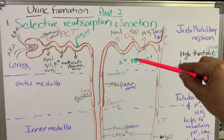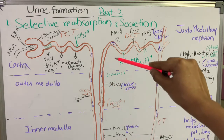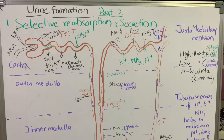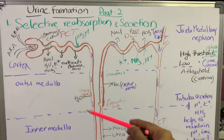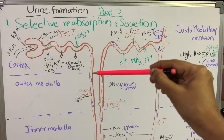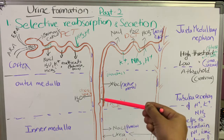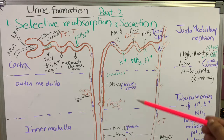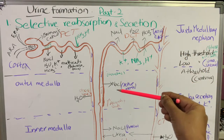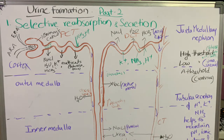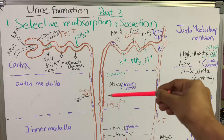The PCT continues as Henle's loop, which contains two limbs: the descending limb and the ascending limb. In the descending limb, about 5% of reabsorption occurs. Henle's loop is very important to maintain the osmolarity of the medullary region. The descending limb is permeable to water, so water comes out of the filtrate into the outer medullary interstitial fluid. As water comes out, the filtrate concentration increases gradually as it moves downwards toward the inner medullary region, reaching maximum concentration at the U-turn.